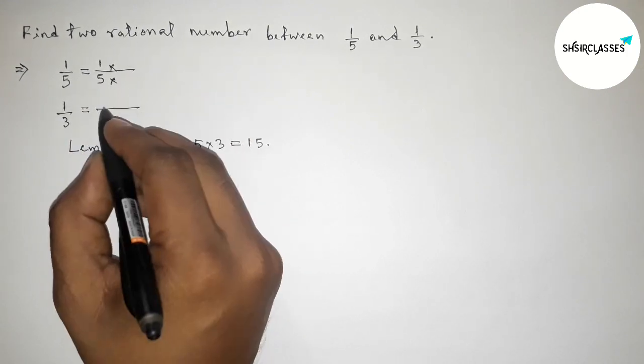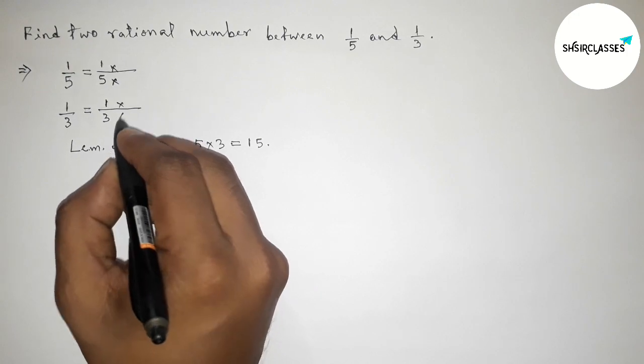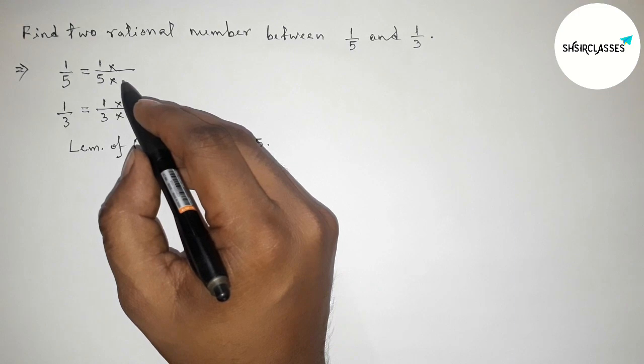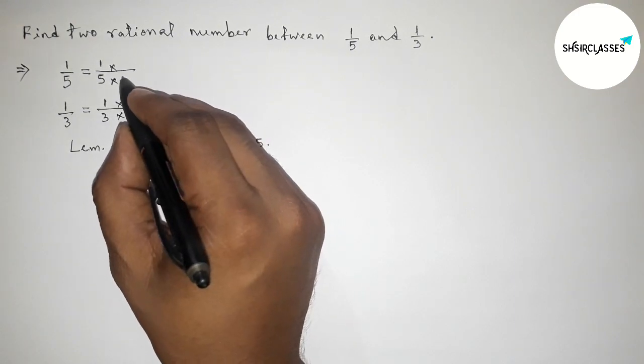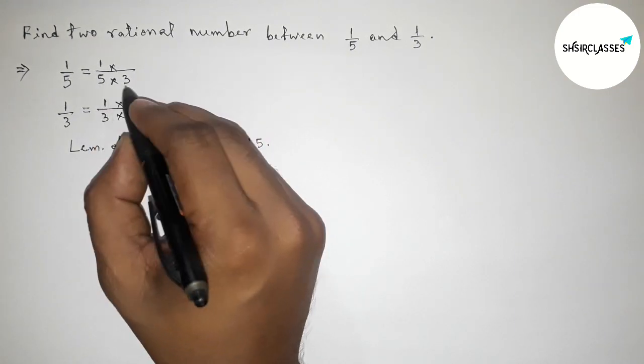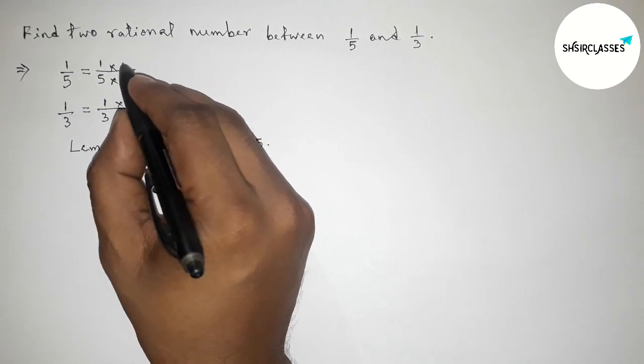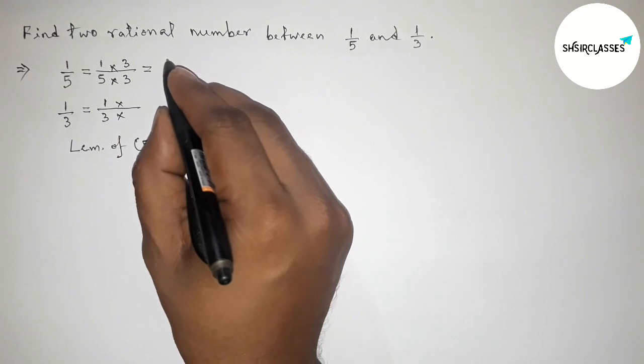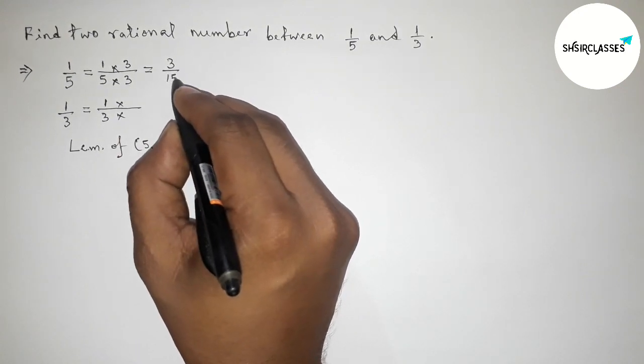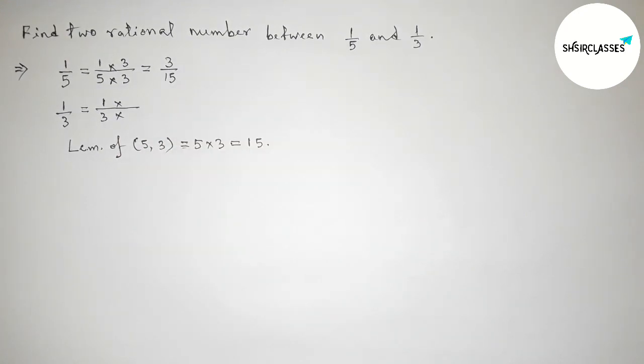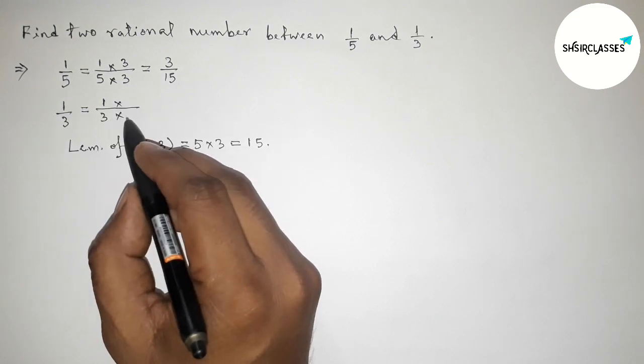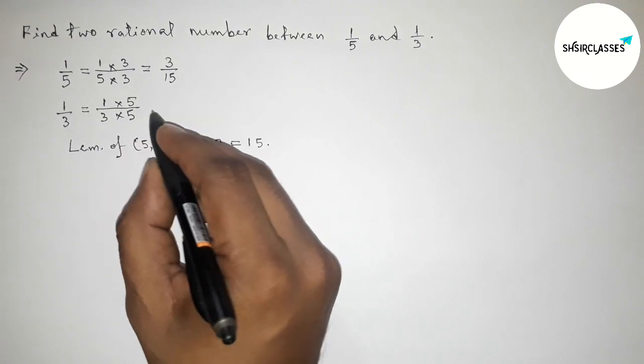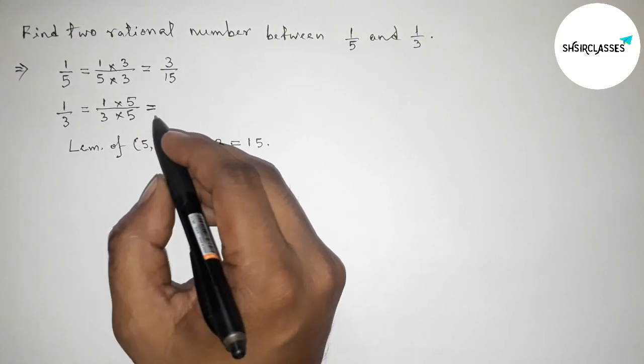Now making the denominators 15. First write down 1 by 5 and 1 by 3. For 1 by 5, multiply by 3 up and down to get 3 by 15. For 1 by 3, multiply by 5 up and down to get 5 by 15.